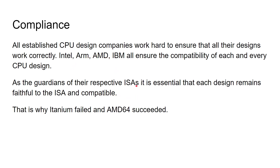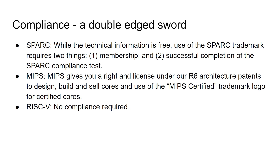So it's key that these ISAs — whether they're commercial ones from Intel, ARM, IBM, or AMD — they have compliance. They are compatible with what already exists. Compliance is actually a double-edged sword, because while the technical information for SPARC is free, using the SPARC trademark requires two things: you need to be a member and you need to successfully complete the SPARC compliance test. Even SPARC as an open source ISA says, if you want to call it SPARC, you're going to have to pass this compliance test. MIPS gives you the right to license under the R6 architecture and use the MIPS certified trademark for certified cores. MIPS understands that if people want to call something MIPS, they're going to have to be compliant, and that way people know what they're getting.